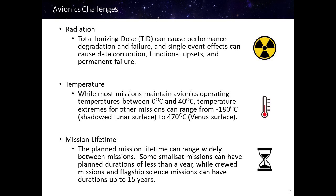Temperature is another challenge. While most missions maintain avionics operating temperatures between 0 and 40 degrees Celsius, temperature extremes for other missions can range from negative 180 degrees Celsius for shadowed lunar surface missions to above 400 degrees Celsius for the surface of Venus.